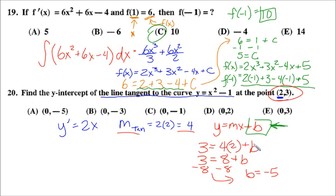Which means as a coordinate point, the y-intercept is (0, -5), answer choice A.